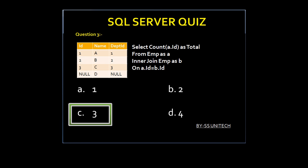Here we are using self-join and again two null values are treated as different values. So option C is true. Let's move to another question.